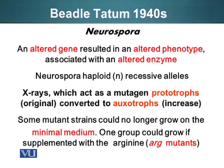Now, let's move on to the 1940s and the classic experiment of Beadle and Tatum. These gentlemen were studying a specific type of mold called Neurospora. They took this organism and mutated it using X-rays as a mutagen, which resulted in an altered phenotype. They were able to associate the altered phenotype with an altered enzyme or enzyme activity.